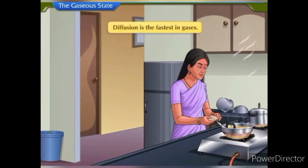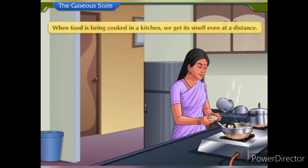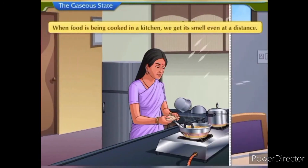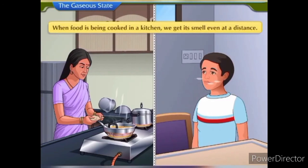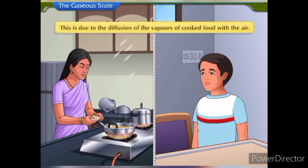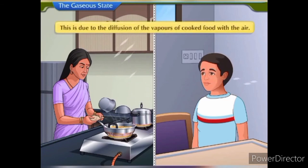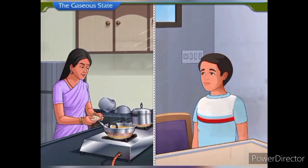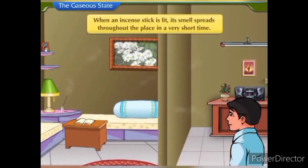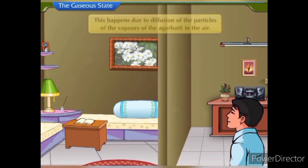Diffusion is the fastest in gases. When food is being cooked in a kitchen, we get its smell even at a distance. This is due to the diffusion of the vapors of cooked food with the air. Similarly, when an incense stick is lit, its smell spreads throughout the place in a very short time, due to diffusion of the particles of the agarbatti vapors in the air.